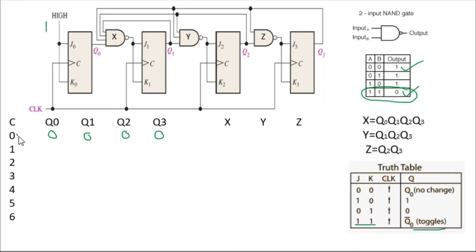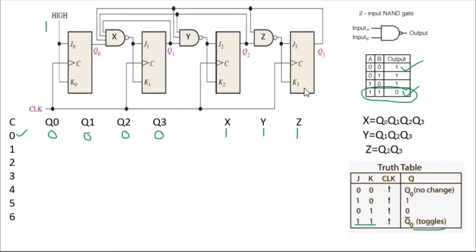At clock zero (before any clock is applied), all outputs are zero. These outputs feed into gates X, Y, and Z. Since all inputs to X are zero, its output is one. Similarly, all inputs to Y are zero, so Y outputs one. All inputs to Z are zero, so Z outputs one. This means before the first clock, J0K0 = 1, J1K1 = 1 (X=1), J2K2 = 1 (Y=1), J3K3 = 1 (Z=1) — all flip-flops are in toggle mode.